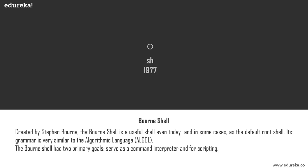We'll begin our journey with the modern shells since 1977, when the Bourne shell was introduced. The Bourne shell, created by Stephen Bourne at AT&T Bell Labs, remains useful even today. The author developed it after working on an Algol 68 compiler, so you'll find its grammar more similar to algorithmic language than other shells. The source code, although developed in C, even used macros to give it an Algol 68 flavor. The Bourne shell had two primary goals: to serve as a command line interpreter for interactive command execution and for scripting.